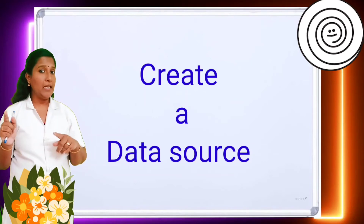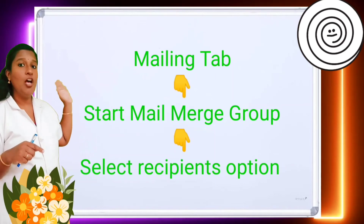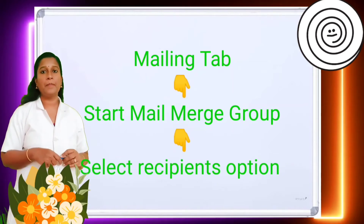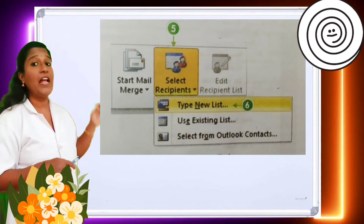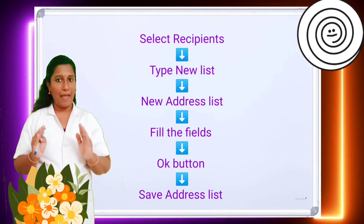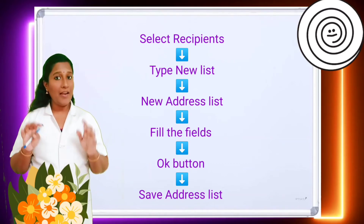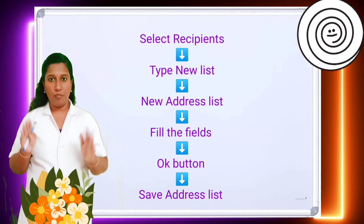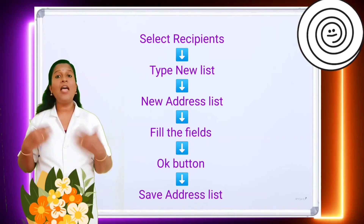To create a data source, first click on the Mailings tab, then click on the Start Mail Merge group. From there, click on the Select Recipients option. From Select Recipients, you can see three sub-options. Click on Type New List. When you click on Type New List, an address list appears. Type all the addresses you need, filling all the fields in the address box. Then click OK and save the address list.